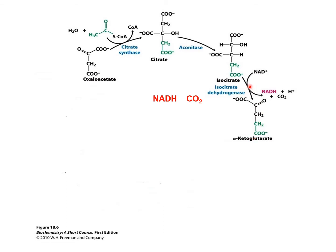This reaction is catalyzed by the enzyme isocitrate dehydrogenase. It removes hydrogen and high energy electrons from isocitrate and puts them into NAD+ forming an NADH molecule. Additionally, this enzyme removes 1 carbon dioxide from the isocitrate. As a result, you have the production of 1 NADH and 1 carbon dioxide from this reaction.